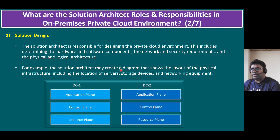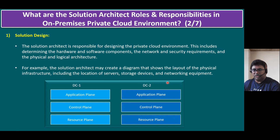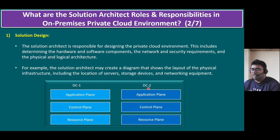For example, the solution architect may create a diagram showing the layout of the physical infrastructure, including the location of servers, storage devices, and network equipment. Most organizations have minimally two data centers — DC1 and DC2 in different locations. Within the architecture diagram, we highlight the main solution components categorized into three parts: resource plane, control plane, and application plane — the same structure for both data centers.